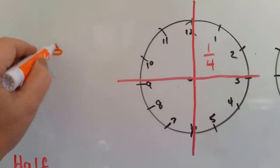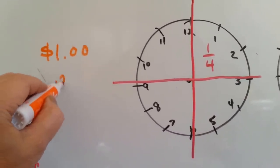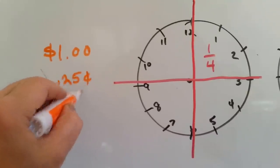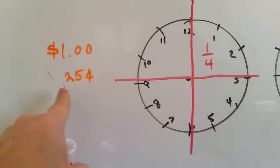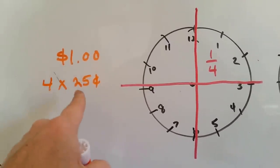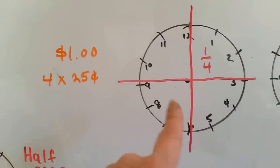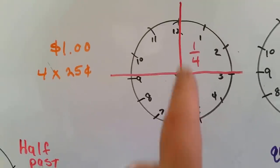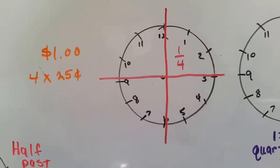In a dollar, there are four pieces of 25 cents. Four times 25 cents is a dollar. So think of it the same way with the clock. There's four quarters to an hour.